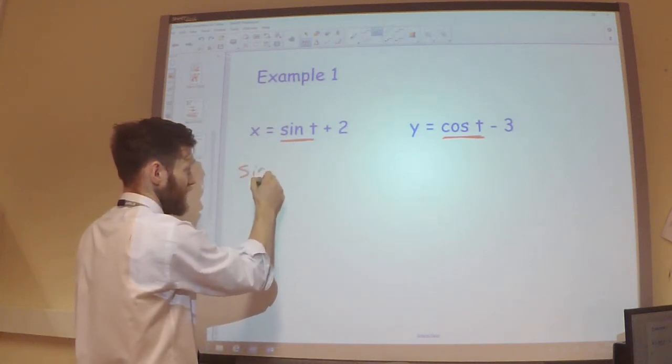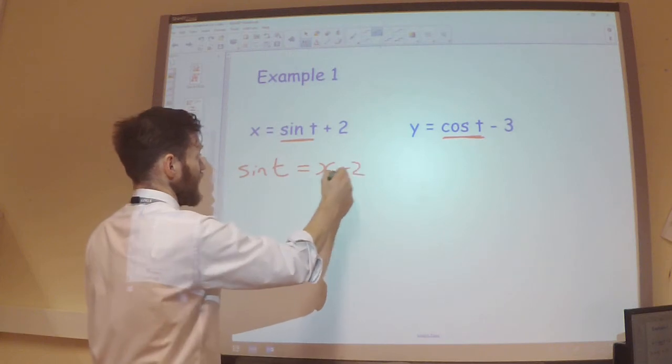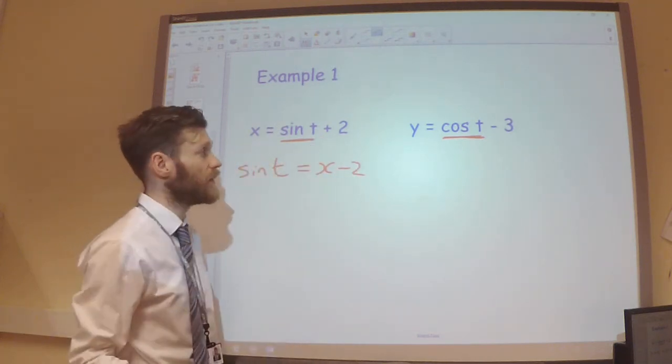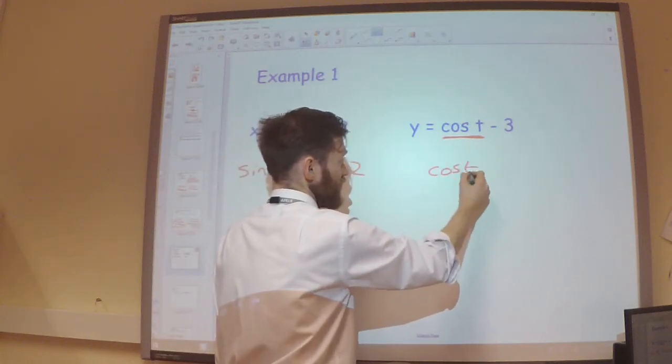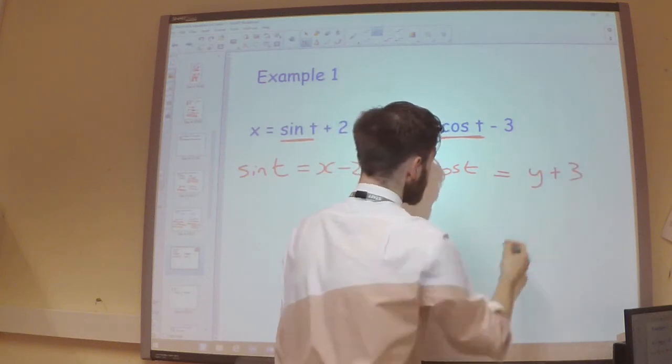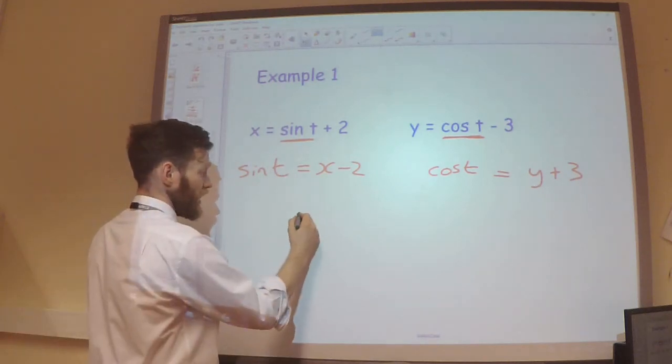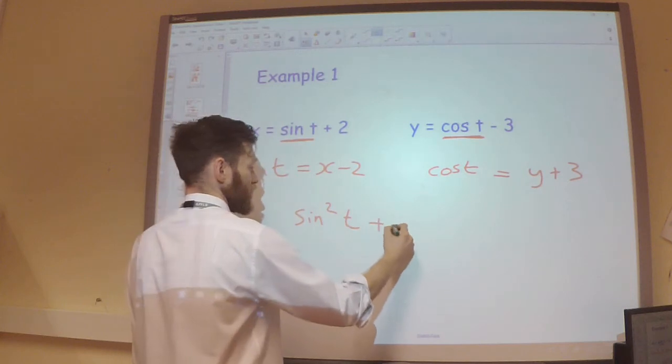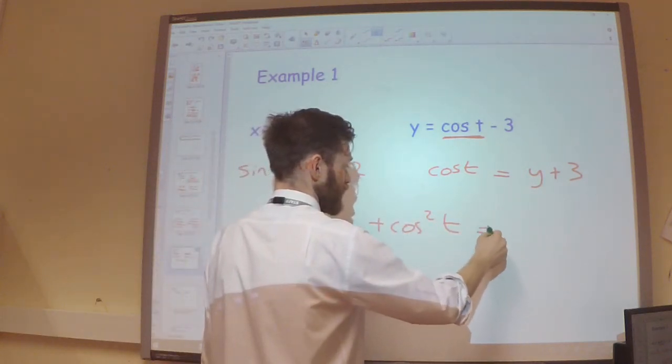So, I'm going to make sine t the subject here. So doing that I'll get x minus 2. Over here, I'm going to make cos t the subject. So I'm going to add 3, so cos t equals y plus 3.